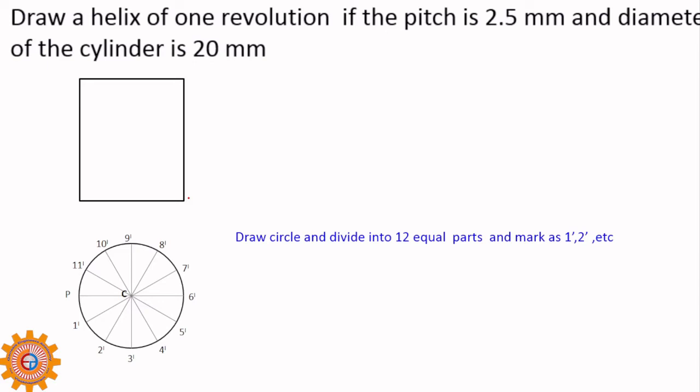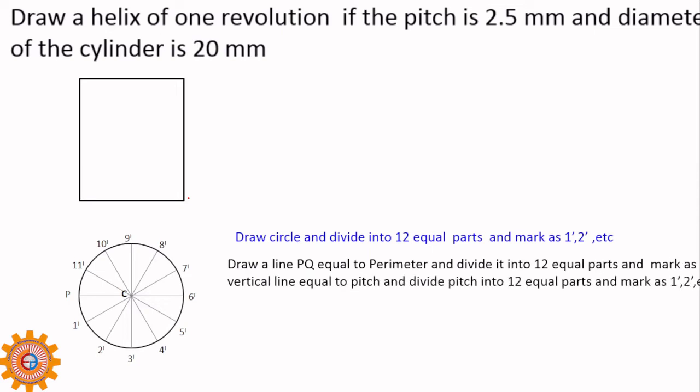Next one is draw line PC equal to perimeter, and divide that into 12 equal parts. Because we have divided the circle into 12 equal parts, that thing has to be kept in mind while dividing. This is the horizontal line PC, that is equal to perimeter. And you have to draw one vertical line that is equal to pitch. But I have not taken any scale.